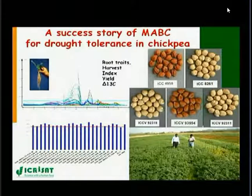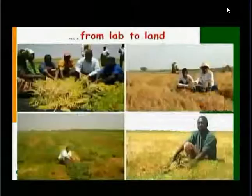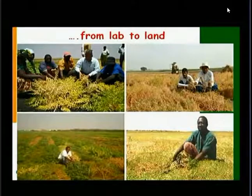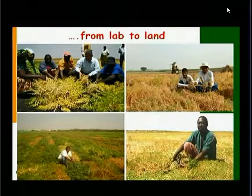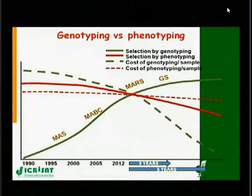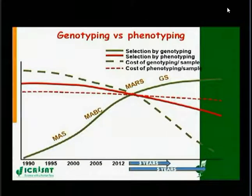We are now talking about translating this genomics research from the laboratory to the land, which is the main target of many CGIAR research institutes. We need to enhance crop productivity in developing countries. When we look at the range of molecular breeding approaches, we believe that in the next three to five years, genomic selection is going to be a very promising molecular breeding approach, especially as the cost of genotyping is going down, as you can see from the dotted green line.